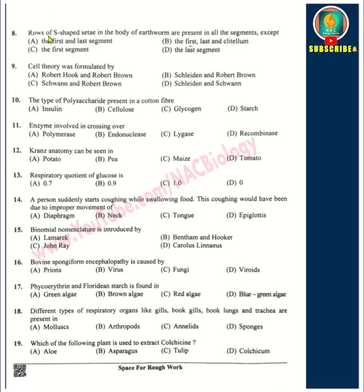Question number 8: Rows of S-shaped setae in the body of earthworm are present in all segments except the first, last, and clitellum — these are locomotory organs. Cell theory was formulated by Schleiden and Schwann. The polysaccharide present in cotton fiber is cellulose. The enzyme involved in crossing over is recombinase.